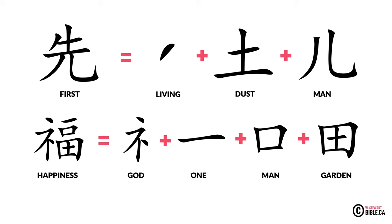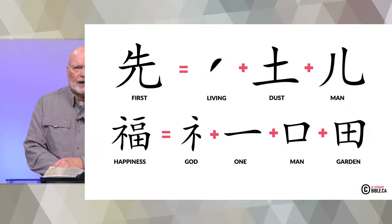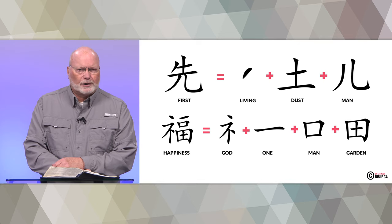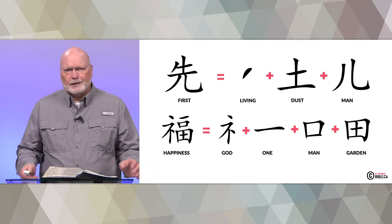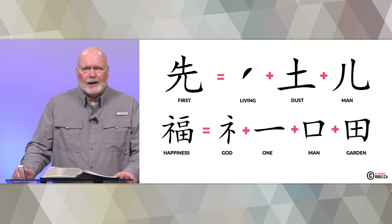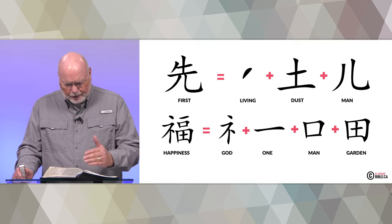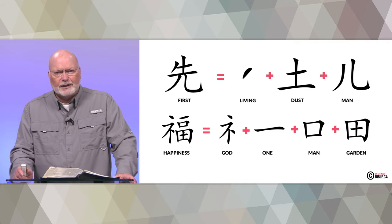Next we see the idea of happiness in the Chinese characters. That is another busy character, but in it we have God, represented by some interesting-looking artwork, along with the sign for life, then man, and then a garden. This is the Chinese character representing happiness. What could represent happiness better than man in the garden in fellowship with God? That's how the Hebrew writers put it, and that's how we see it in the Chinese language.